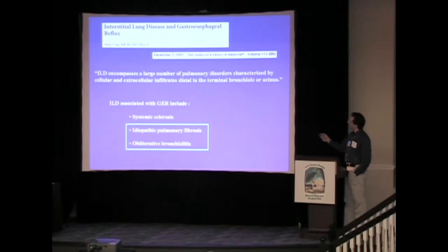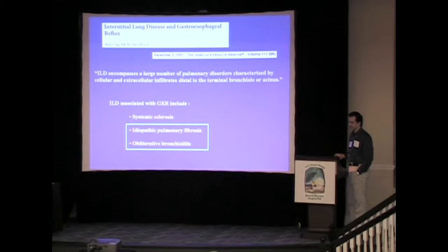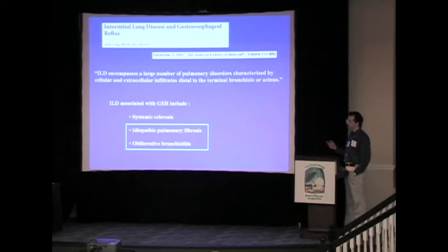ILD encompasses a large number of pulmonary disorders characterized by cellular and extracellular infiltrates distal to the terminal bronchiole or acinus. The association between systemic sclerosis and gastroesophageal reflux is more of a correlation towards the severity and progression of the disease — the interstitial lung component and the gastroesophageal component go along together, and no causative association has been identified.